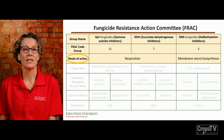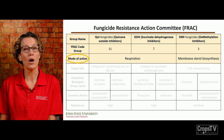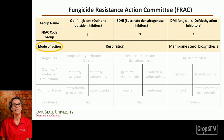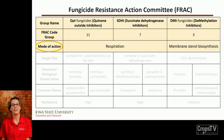Here is a table we're going to go through. You can see the group names: the QOI fungicides, which are your strobilurins or strobies; the SDHIs; and the DMIs, which are your triazoles. The QOI and SDHI fungicides both inhibit respiration, while the DMI fungicides are active against membrane sterol biosynthesis.